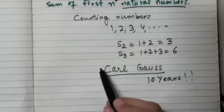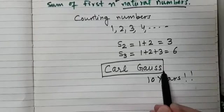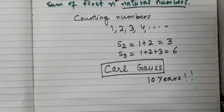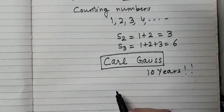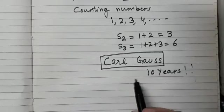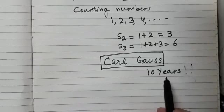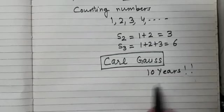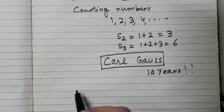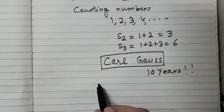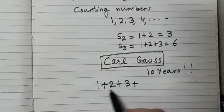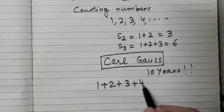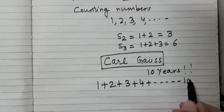And he thought that students might take some time to do this. But this boy, he used a trick. Would you like to know what did he do in his class at the age of 10 years? What was the question? The question given by the teacher was that you need to add numbers, the natural numbers from 1 to 100.